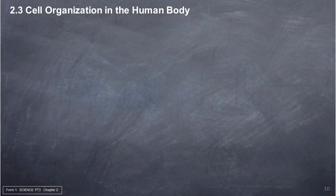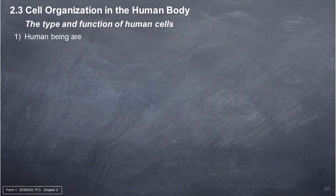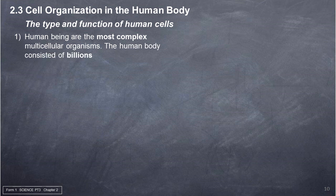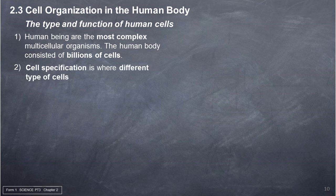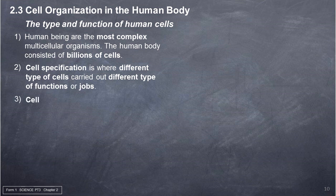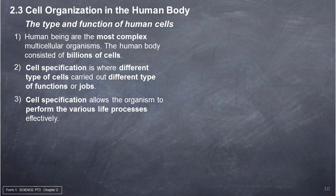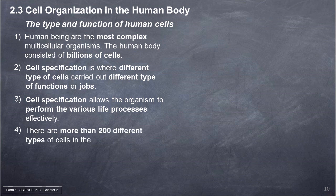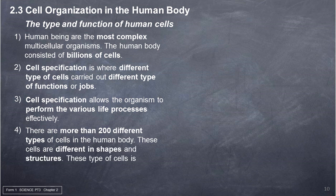2.3 Cell Organization in the Human Body. The type and function of human cells. 1. Human beings are the most complex multicellular organisms; the human body consists of billions of cells. 2. Cell specialization is where different types of cells carry out different types of functions. 3. Cell specialization allows the organism to perform the various life processes effectively. 4. There are more than 200 different types of cells in the human body, differing in shapes and structures. These types of cells are called specialized cells.